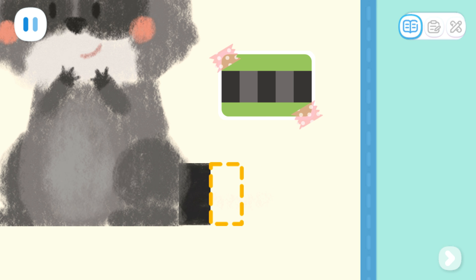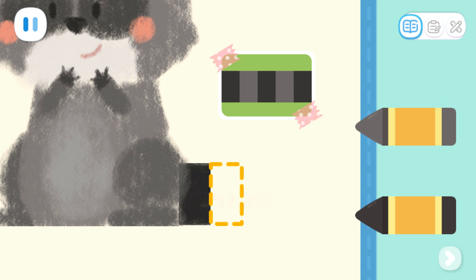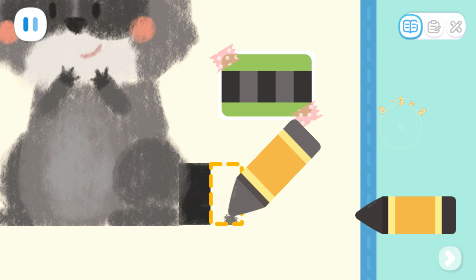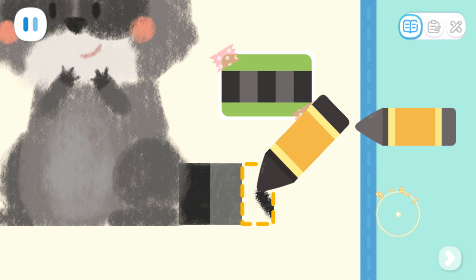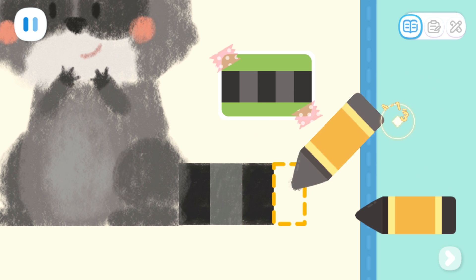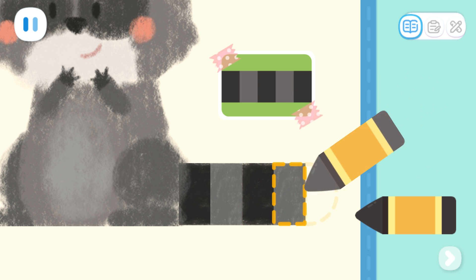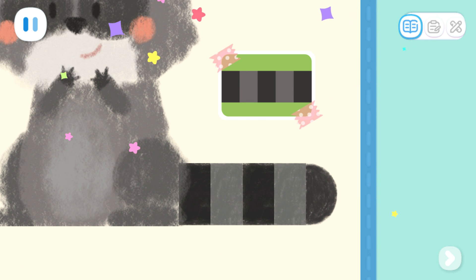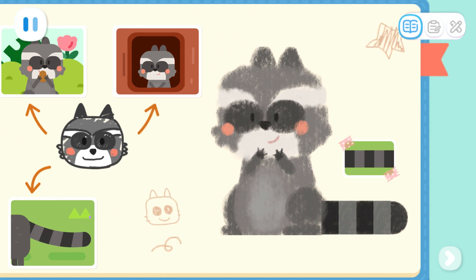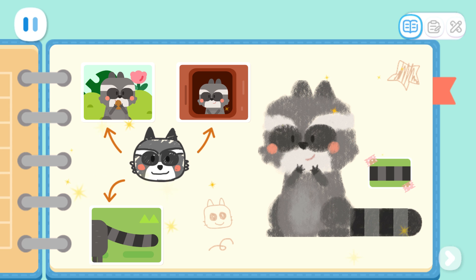The first section is black. What color should I paint next? Yes, it's gray! Keep coloring it section by section according to the rule! Great job! The raccoon notebook is complete!